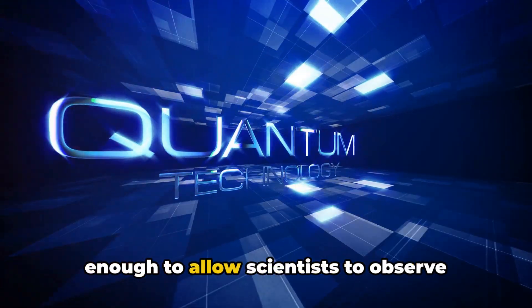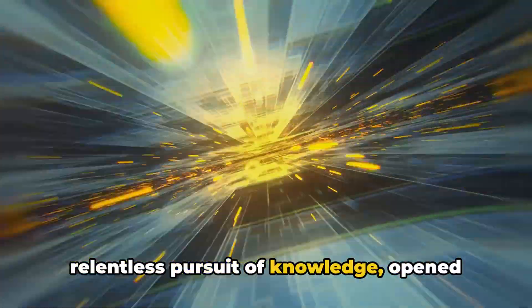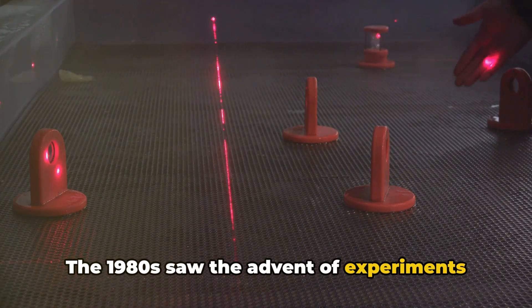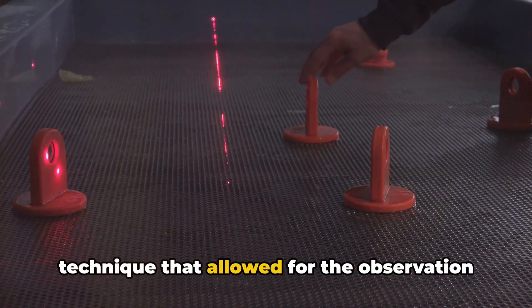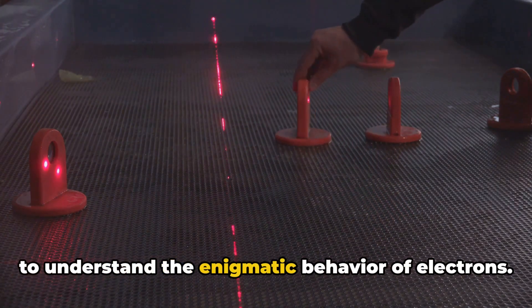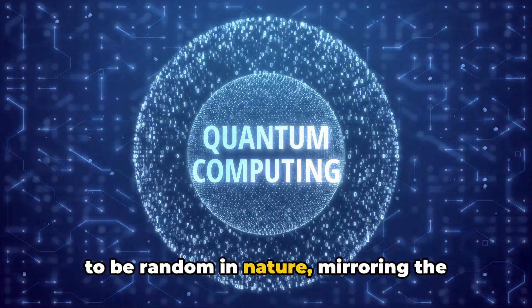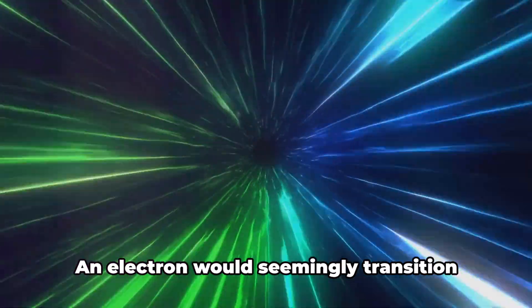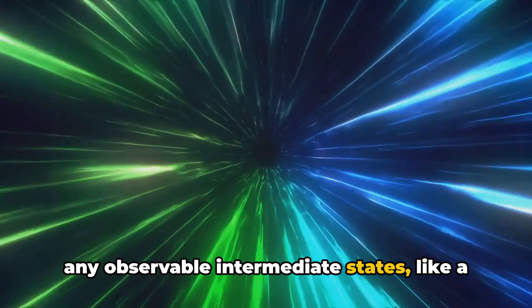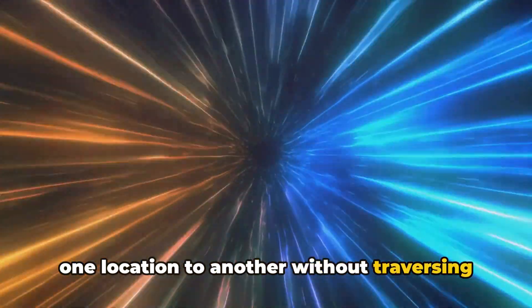By the 1980s, technology had advanced enough to allow scientists to observe quantum jumps. This breakthrough, a result of the relentless pursuit of knowledge, opened new doors to understanding quantum mechanics. The 1980s saw the advent of experiments that trapped atoms using lasers, a technique that allowed for the observation of quantum jumps in action. This was a significant step in the quest to understand the enigmatic behavior of electrons. The quantum jumps, as observed, appeared to be random in nature, mirroring the randomness suggested by the Copenhagen interpretation. An electron would seemingly transition from one energy level to another without any observable intermediate states, like a character in a video game teleporting from one location to another without traversing the space in between.